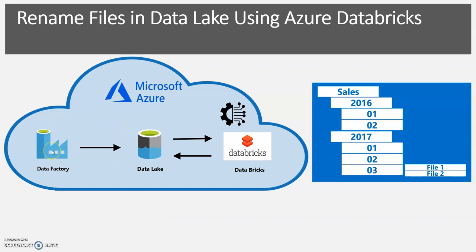Assume that you have to extract or dump files from an ERP system into a data lake. We are going to use Azure Data Factory for it. Assume we are dumping files into the data lake based on a file structure: Sales, then the year, then the month. Because of some kind of file path problem or misinformation, the Data Factory operation accidentally dumped 2016 January files into the 2017 January folder.